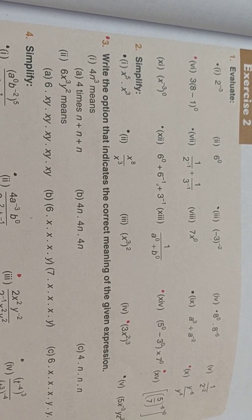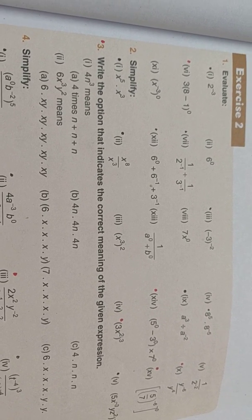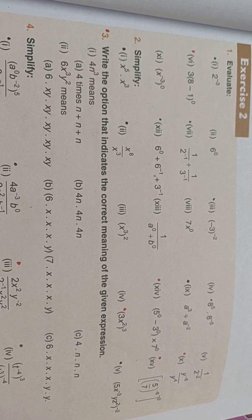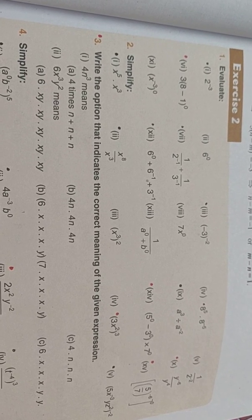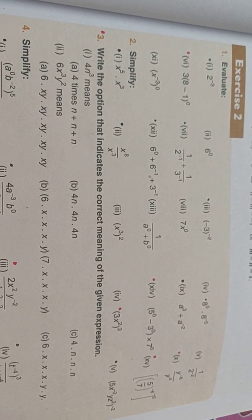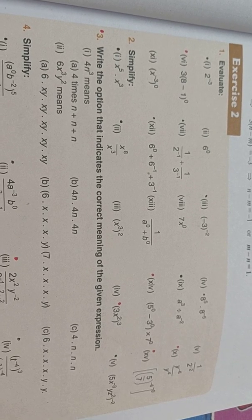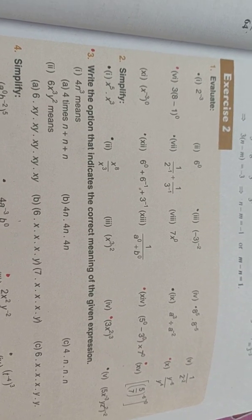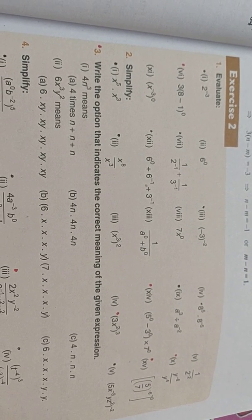First one is 4n cube means there are three options. Second one is 6x cube into y square means the following. You have to choose the correct option from these two. In the next video again, I will be telling you about the remaining number of sums.